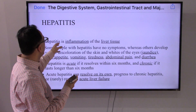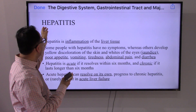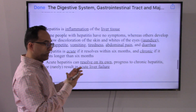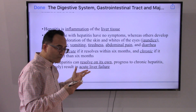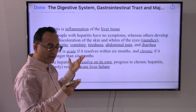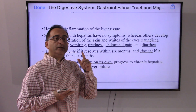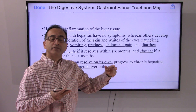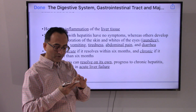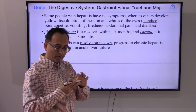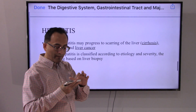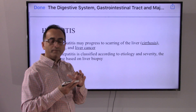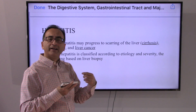Another liver disorder is hepatitis — inflammation of the liver tissue. Symptoms may include jaundice, poor appetite, vomiting, abdominal pain, and diarrhea. Hepatitis can be acute if it resolves within six months, or chronic if it continues beyond six months. It may lead to acute liver failure, and chronic hepatitis can unfortunately progress to cirrhosis.